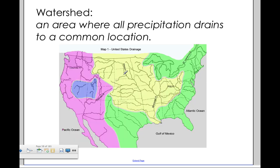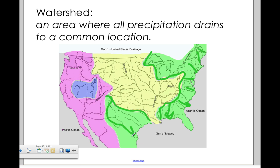A watershed is an area where all precipitation drains to a common location. Here's a simple map showing some watersheds. All the rain that falls in this green area will drain down through these rivers and out to the Atlantic Ocean. Same with this green area here — these rivers flow down this way to the Atlantic Ocean. This river here flows north down to the Atlantic Ocean.